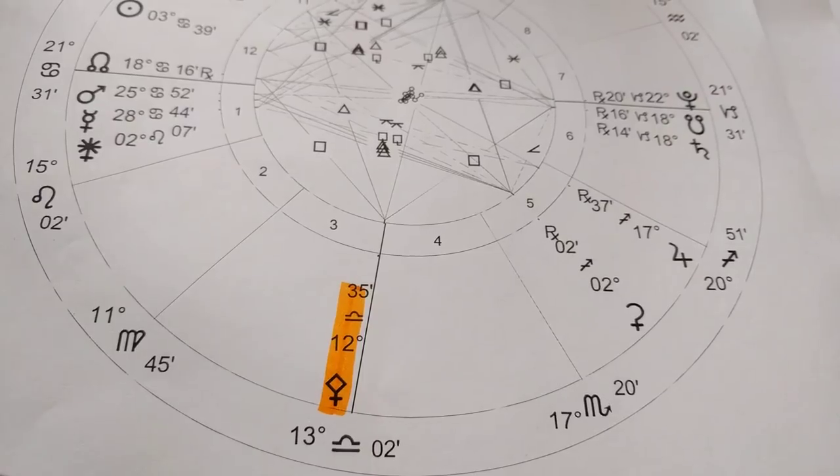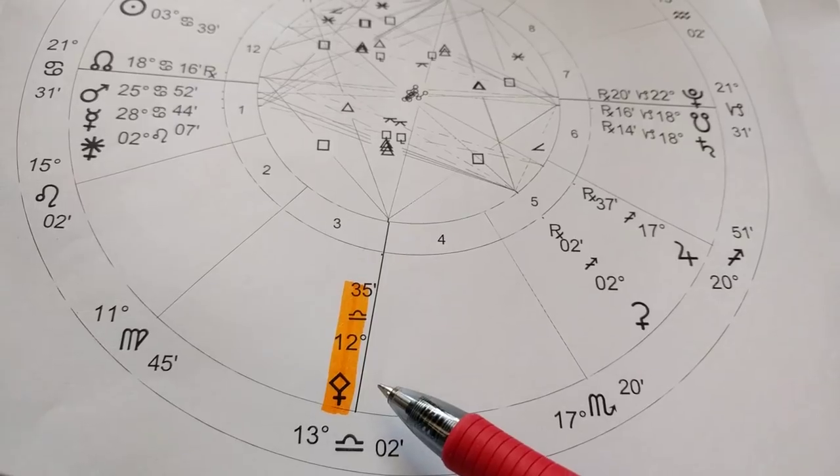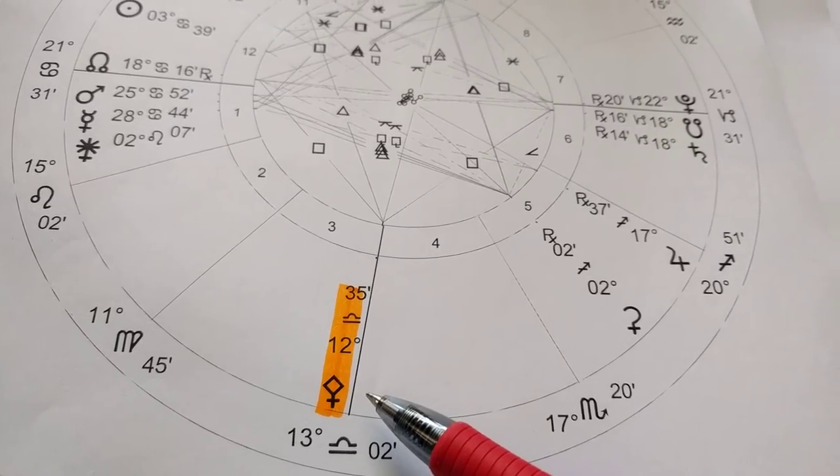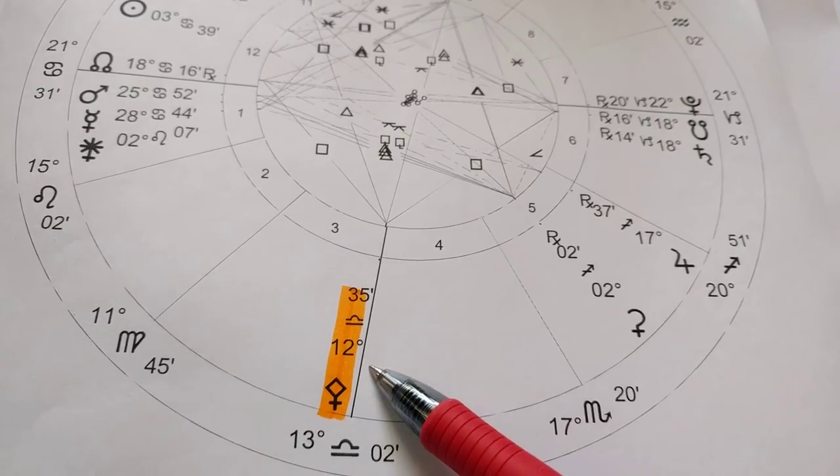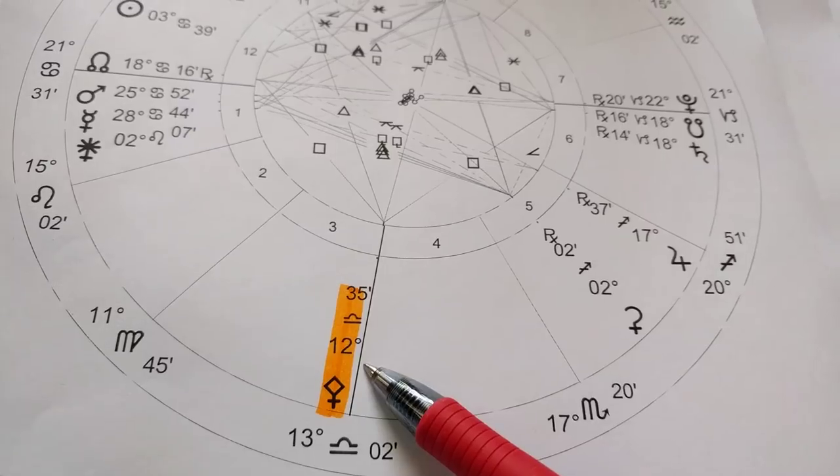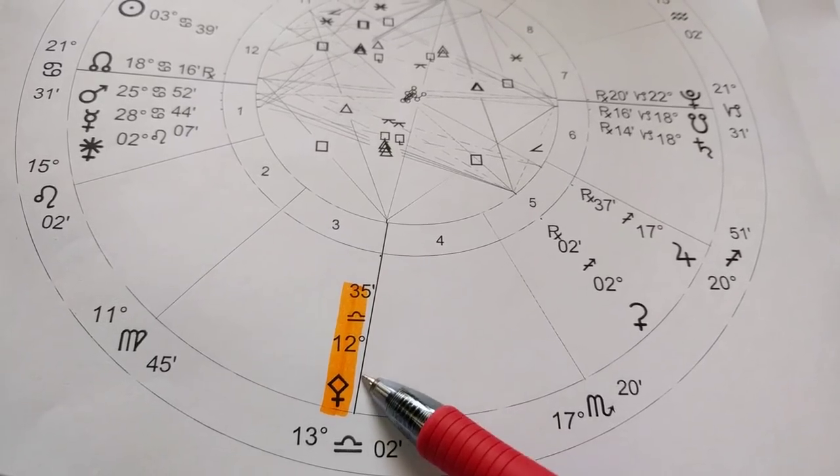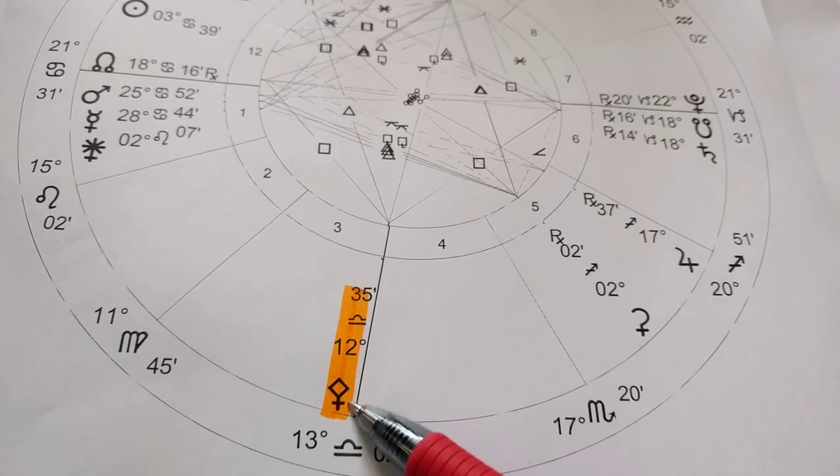As we talk about these asteroids, you will notice overlapping themes, overlapping energies, overlapping archetypes, but each one is their own energy field and they accentuate and bring to life a certain energy within your natal chart. So let's start by looking at the glyph here of Pallas Athene.